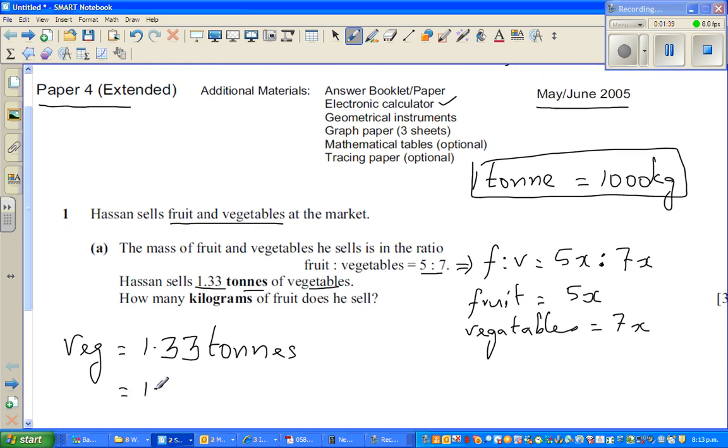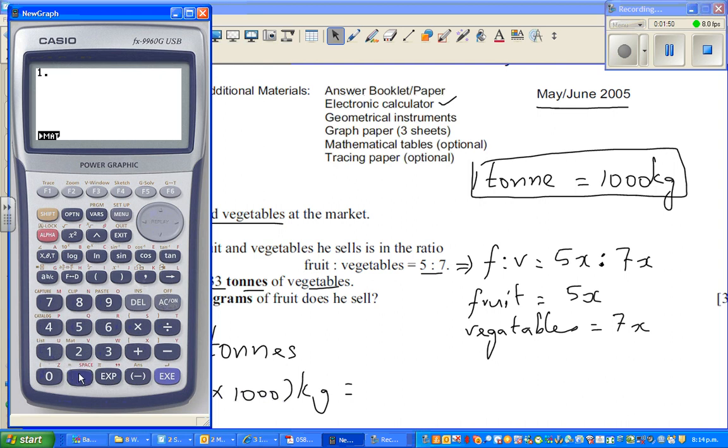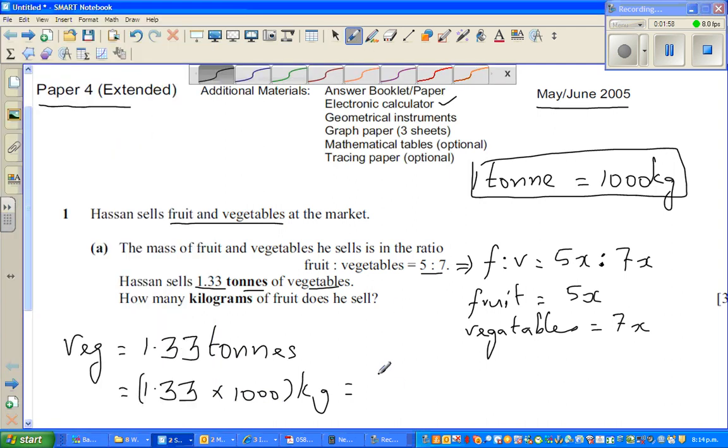This is 1.33 times 1000 kgs. Let us put this in bracket. So it's 1.33 times 1000, which is 1330. You didn't need a calculator. It's always good to check your answer. So that's the total vegetables.